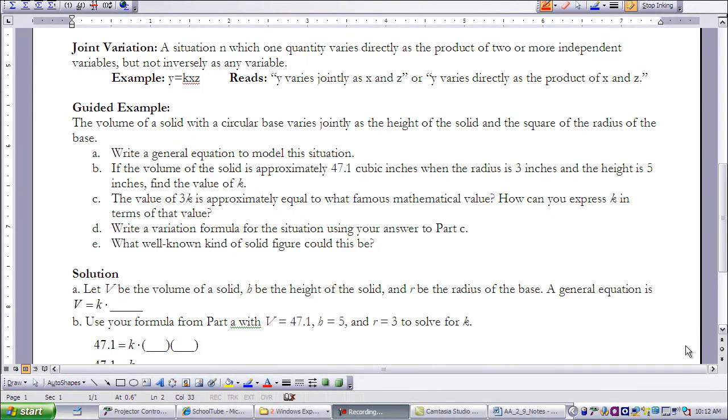Sometimes when we have multiple independent variables, we have a situation where they all happen to vary directly. So we call that a joint variation. It's a situation in which one quantity varies directly as the product of two or more independent variables, but not inversely as any variable.